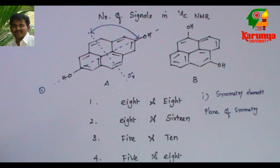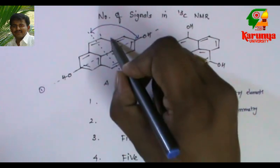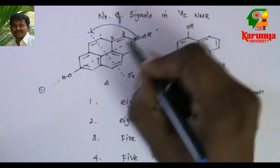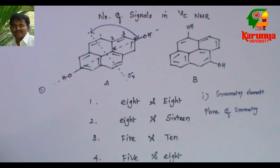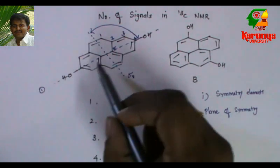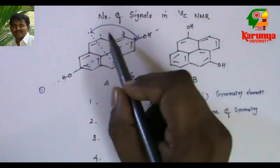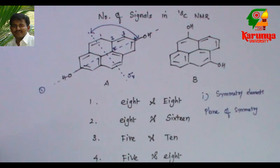Let us try to count. One, two, three, four, and five. Even if the plane is on the carbon, you have to count that. So there are five carbons in one quarter. So that many signals you will get.